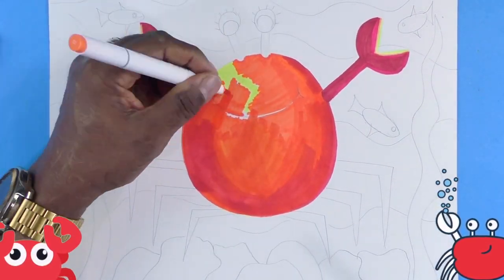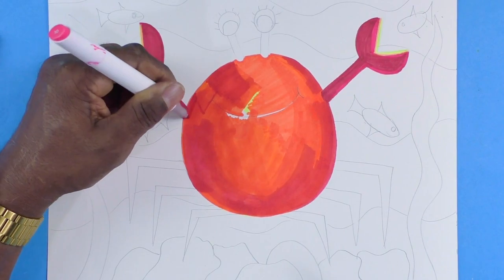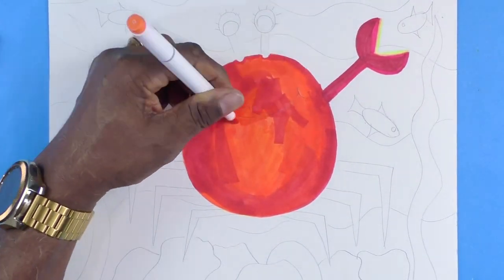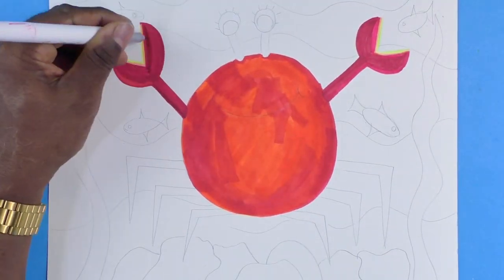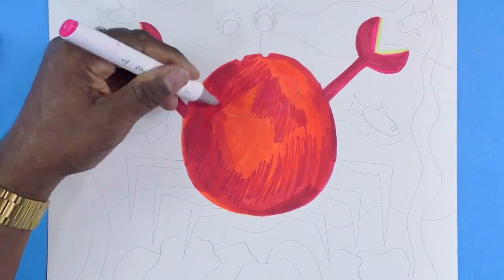And those colors just blended in so nicely. And I'm even going to add some darker reds to it too. Because we want him to have that, I want him to look almost like a red ball.